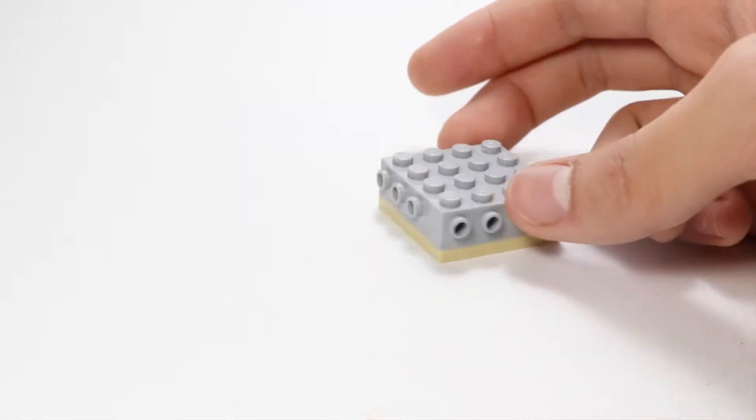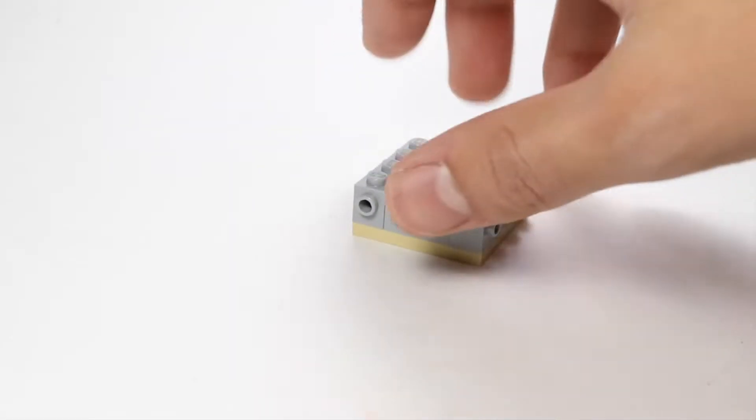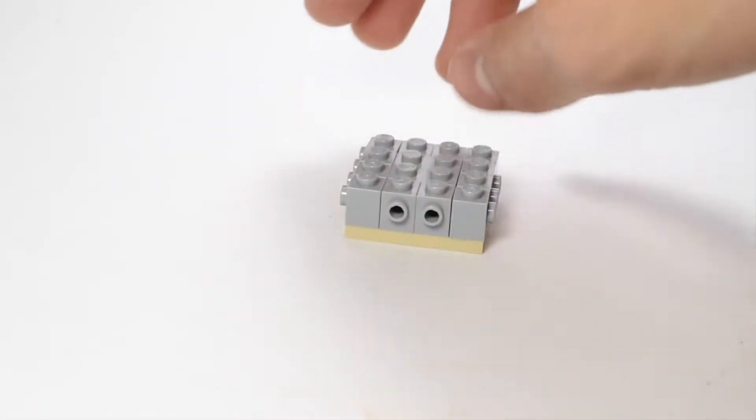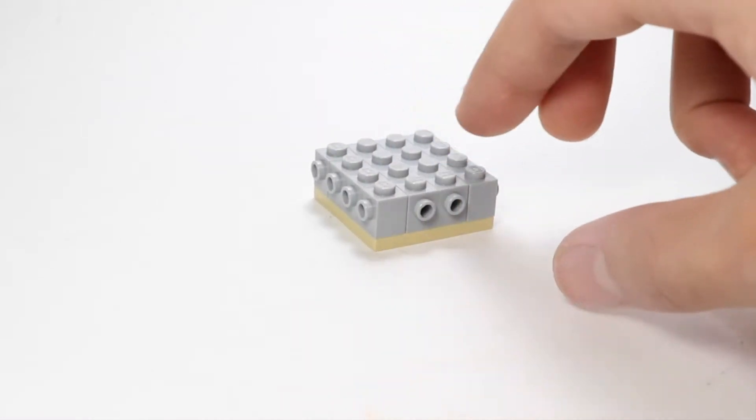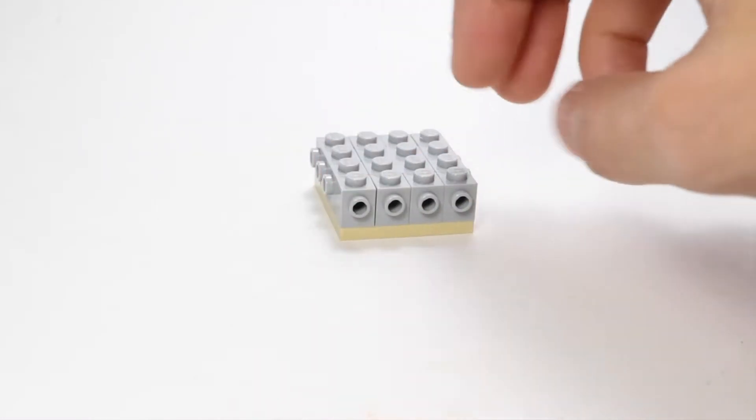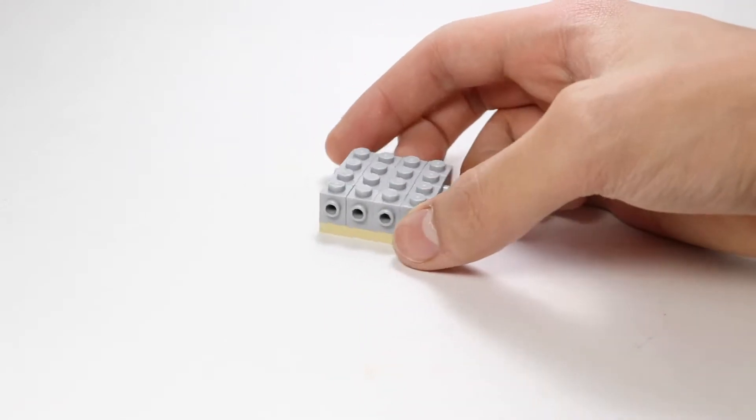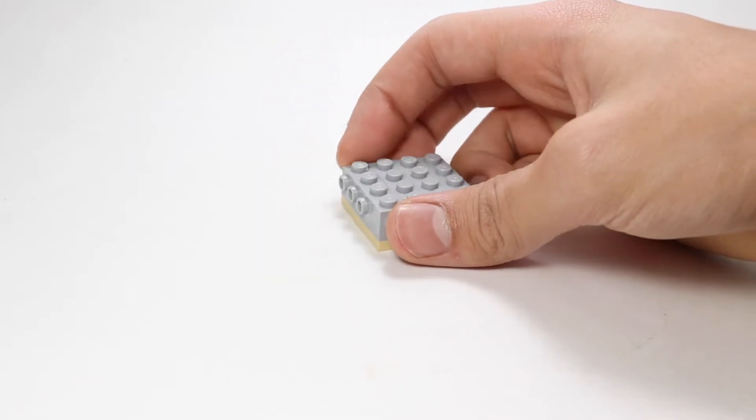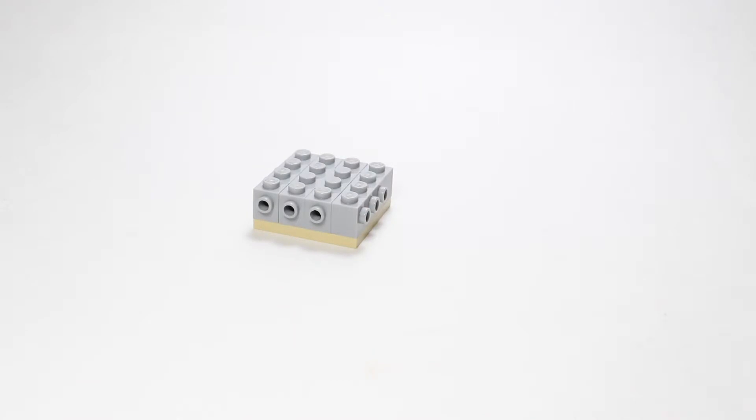It doesn't really matter, honestly. Just make sure that the studs are facing towards the outside in every direction. It doesn't really matter whether there's two studs facing on one side and four on the other. Just get it the way you want it. That's the way you need it, any way you want it.